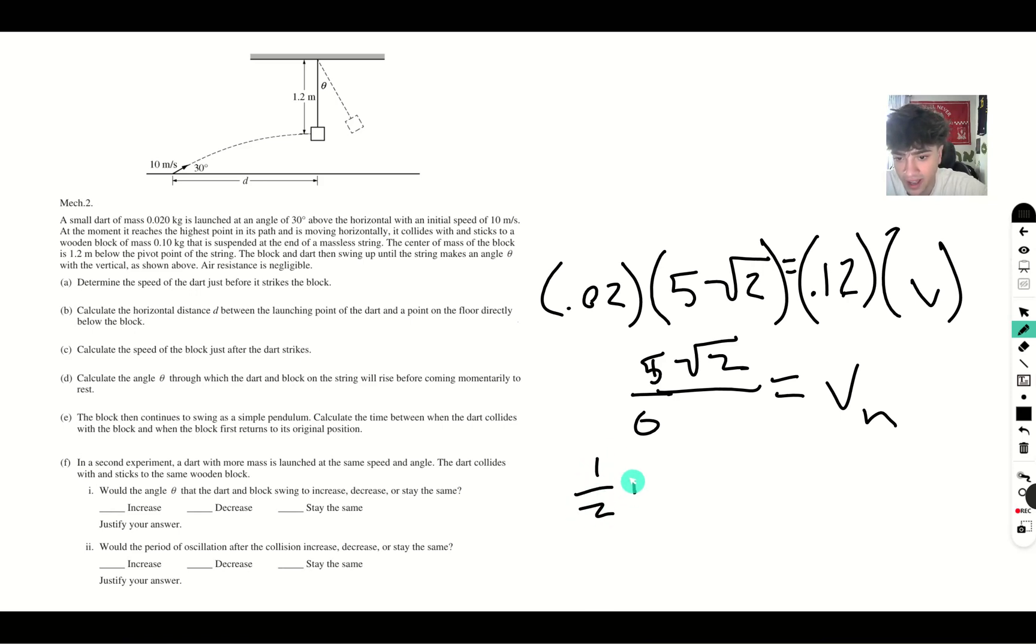We have 1/2 mv squared equals mgh. Our m's cancel out. This squared is going to be 50 over 36 times 2, or divide by 2 is 50 over 72. Divided by h will give us 50 over 720, or 5 over 72. So our h is 5 over 72 meters.